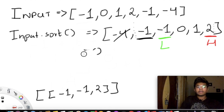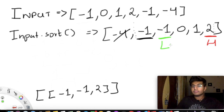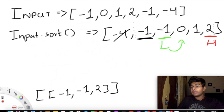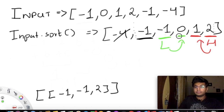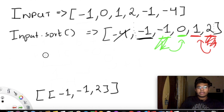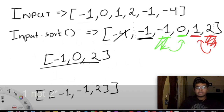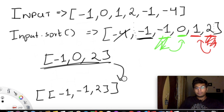Just because we found one solution, we don't stop. We move lower up by 1 and decrease higher by 1. Now lower is 0 and higher is 1. Adding 0 and 1 gives 1 — another valid solution. So we append [−1, 0, 1] to our output list, giving us two solutions so far.